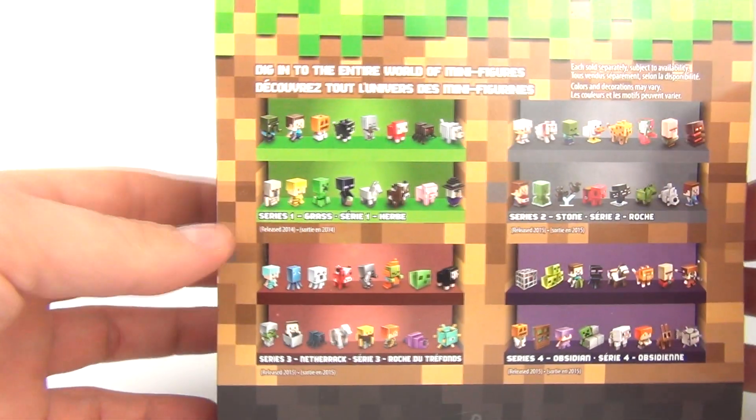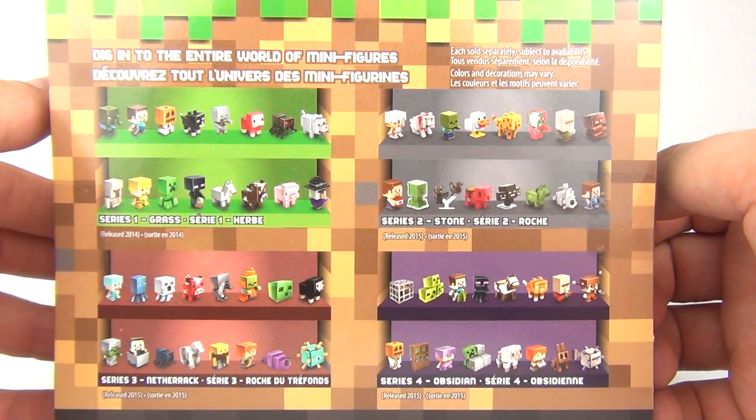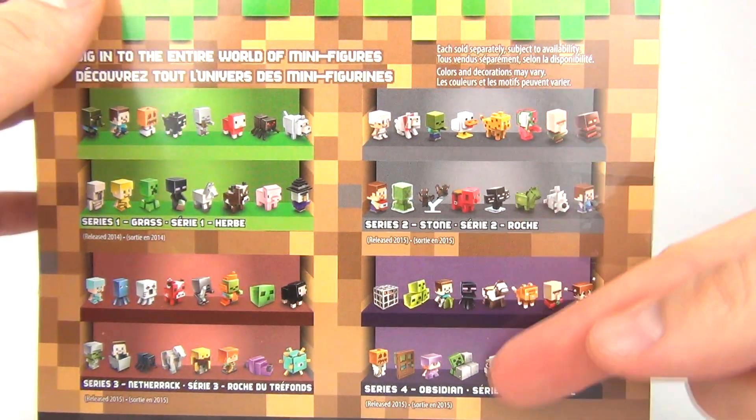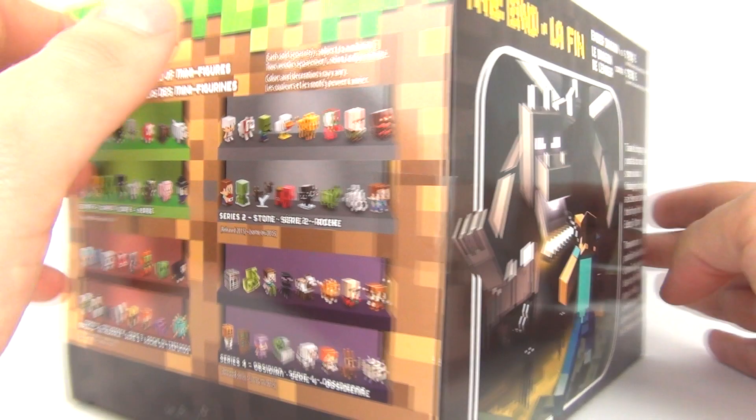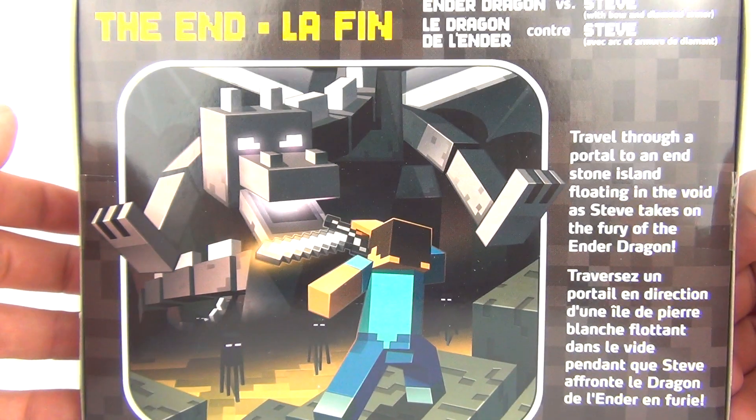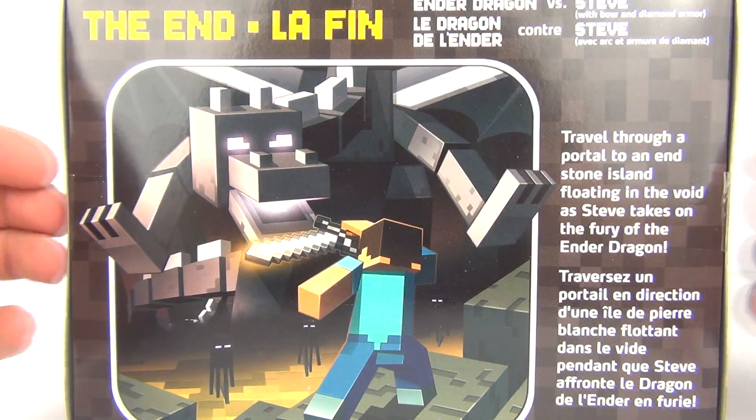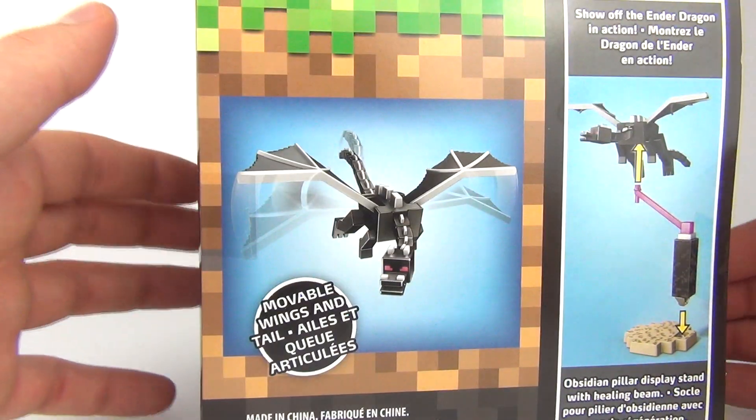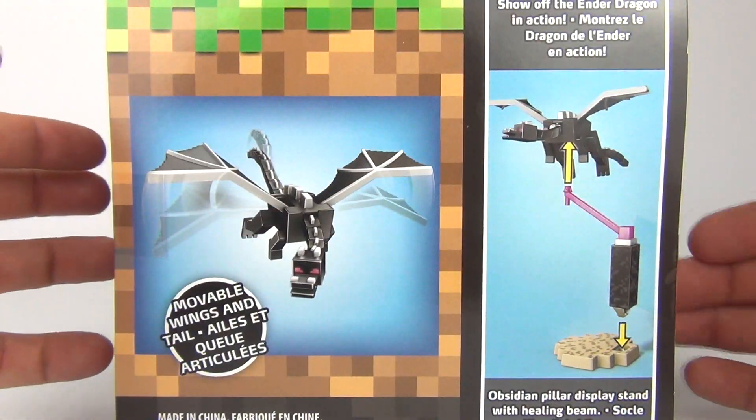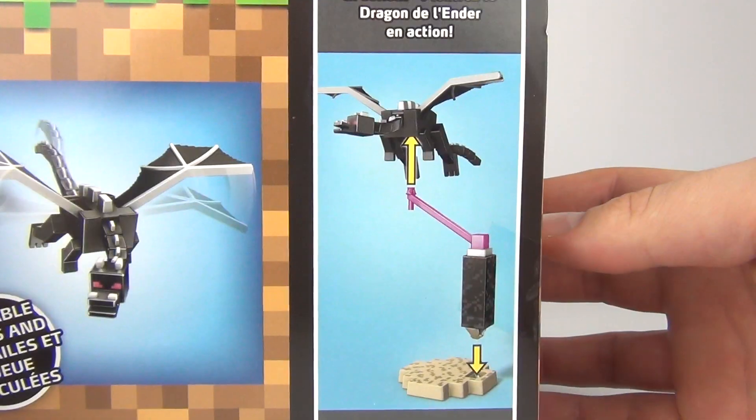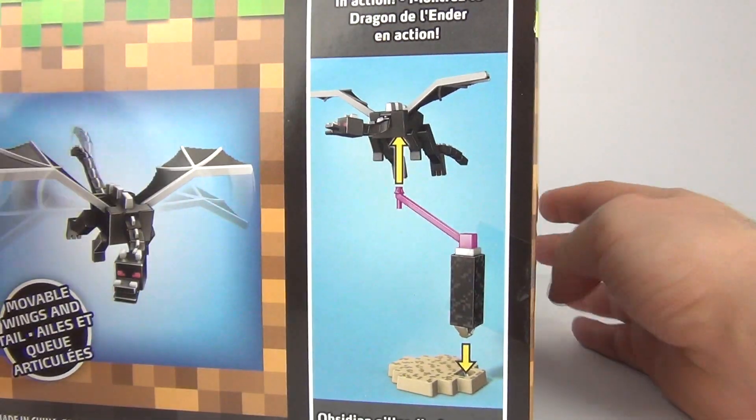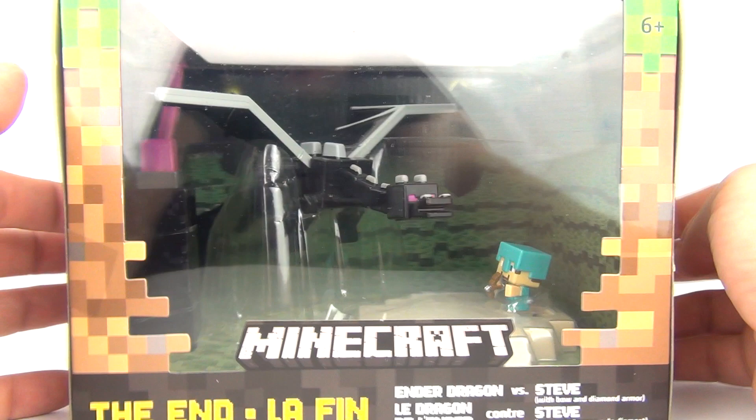Let's give it a spin. It shows you the figures that you can collect as well, goes all the way up to series four which has just been released. We have a nice description on the back as well with a nice picture of Steve and the Ender Dragon. This does come with movable wings and we also get a stand so you can show off the Ender Dragon in all its glory.